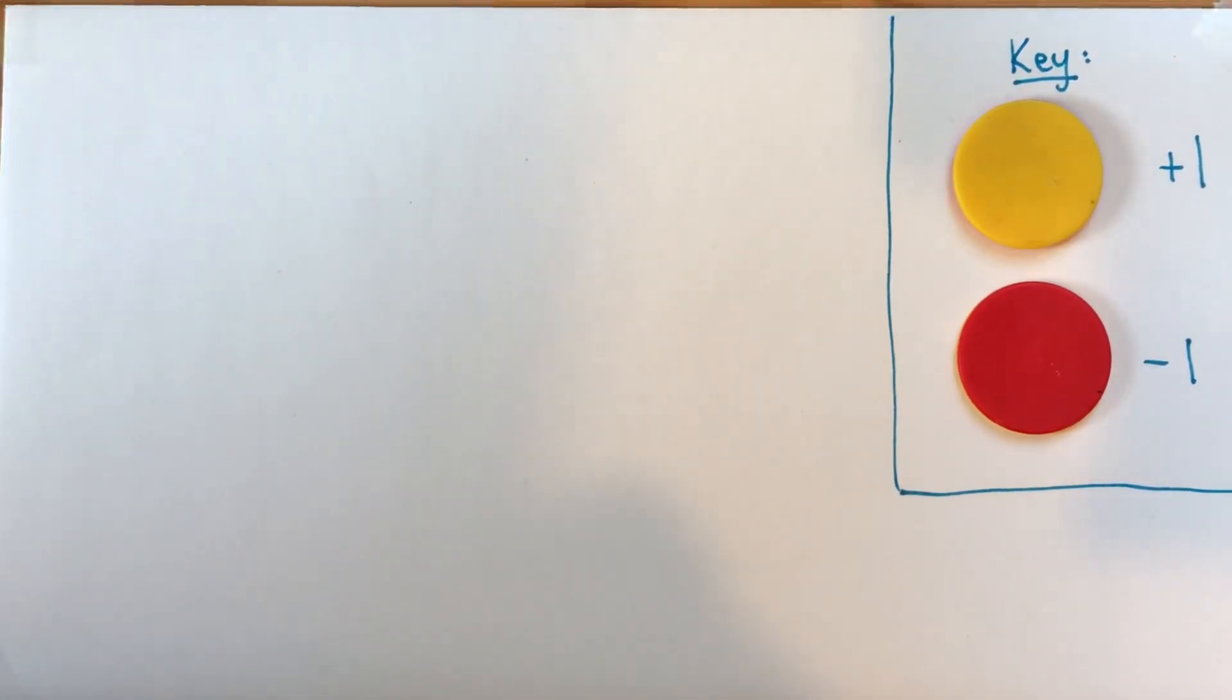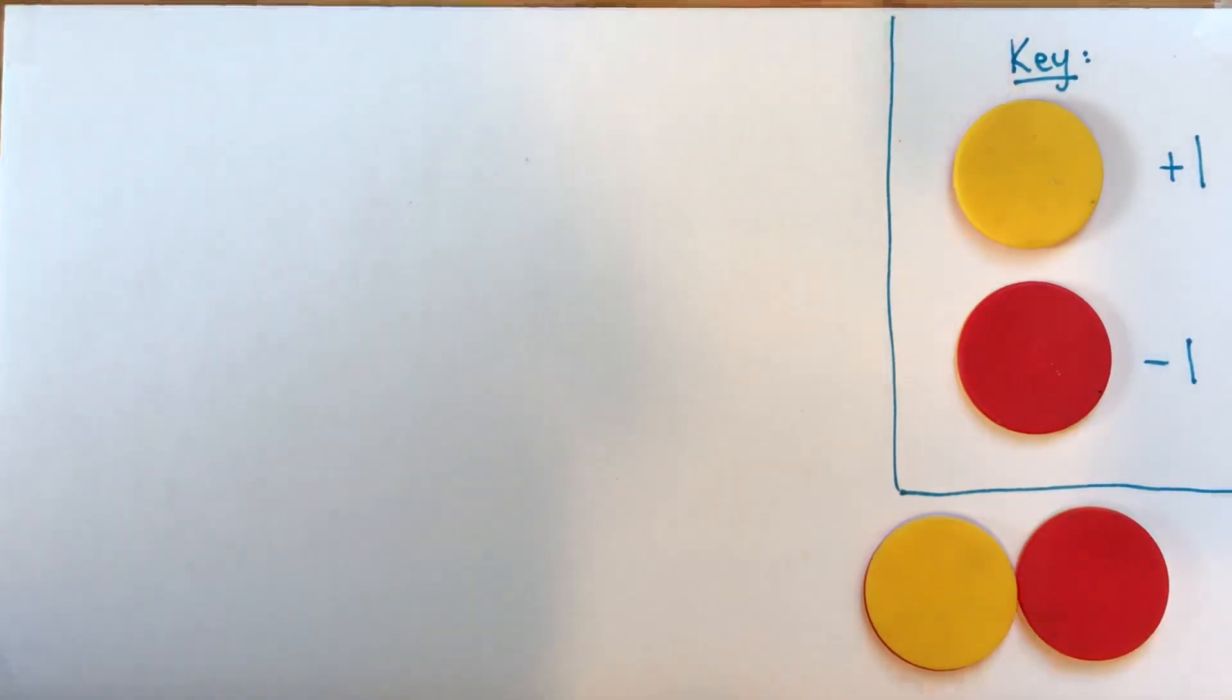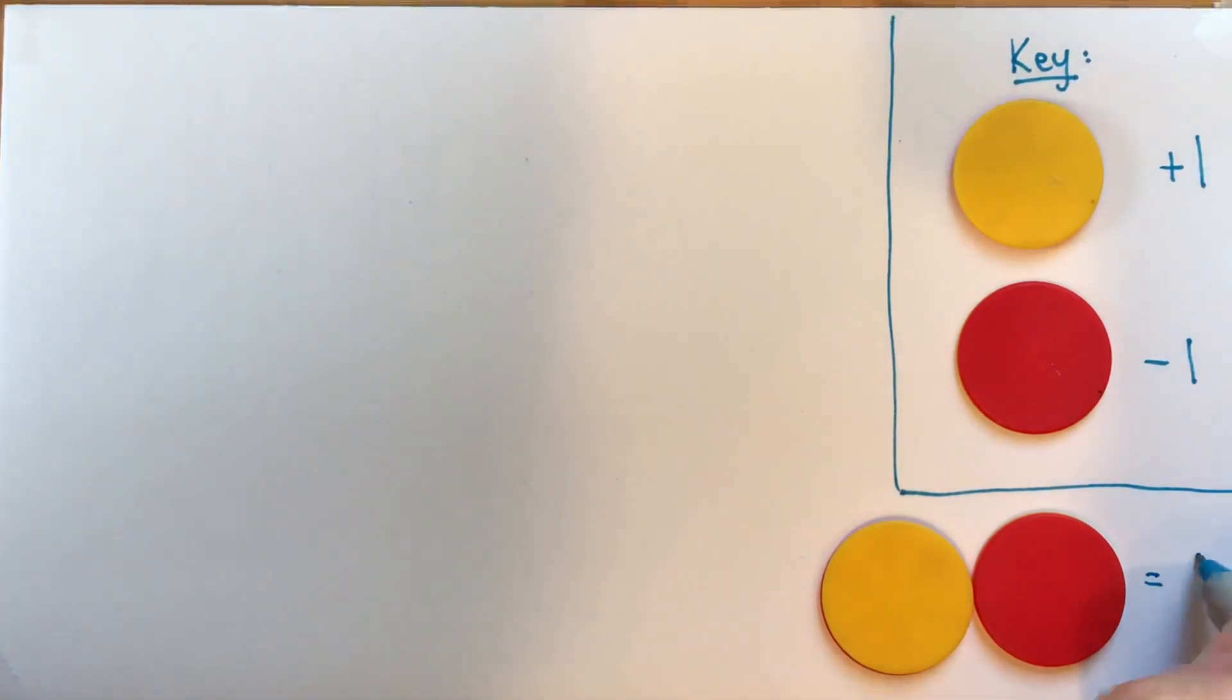Okay, so the really important thing to know about counters, which just comes from something that we know about integers, is that if you have a yellow and a red together, those make zero. We can call them a zero pair. These are equal to zero if you've got one of each together.